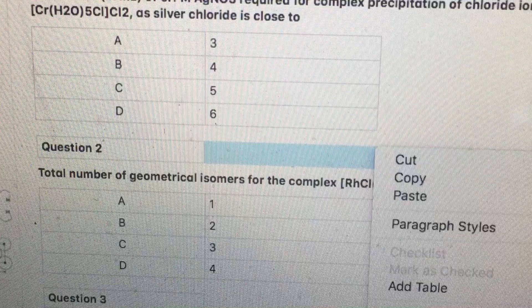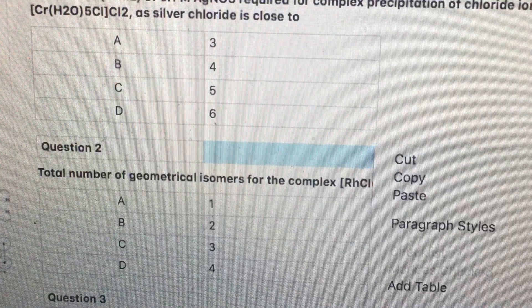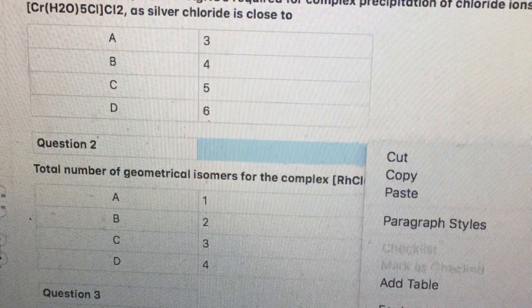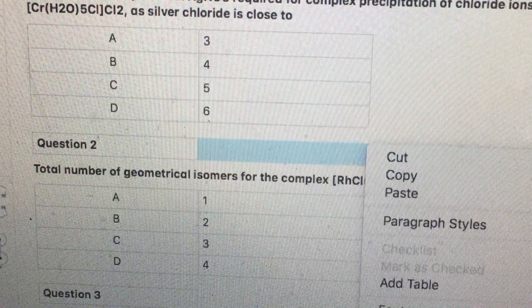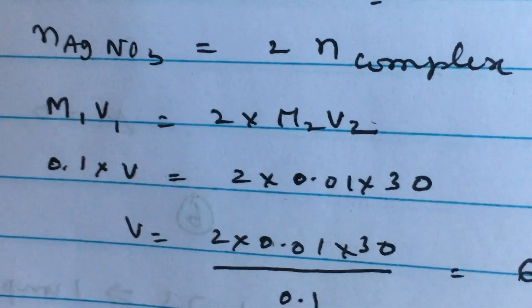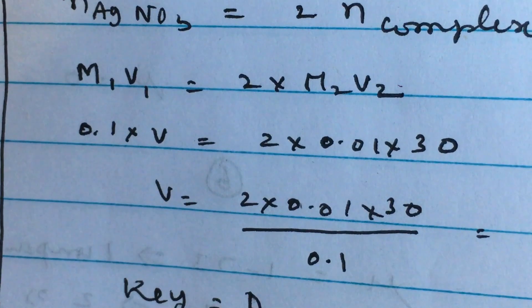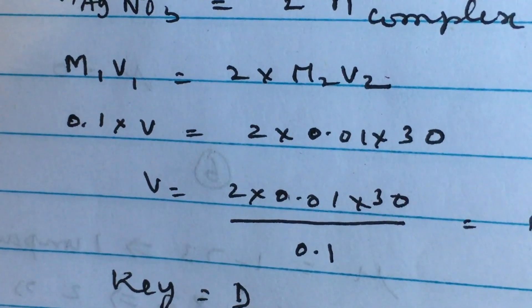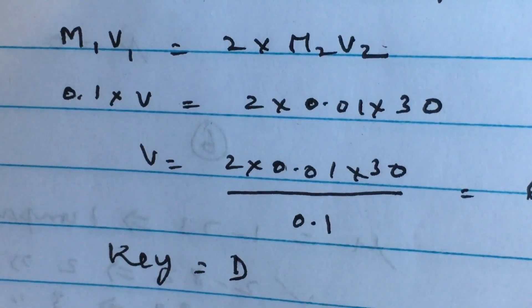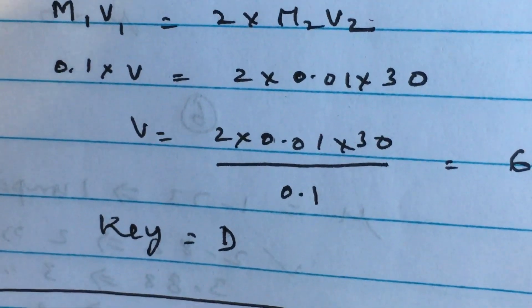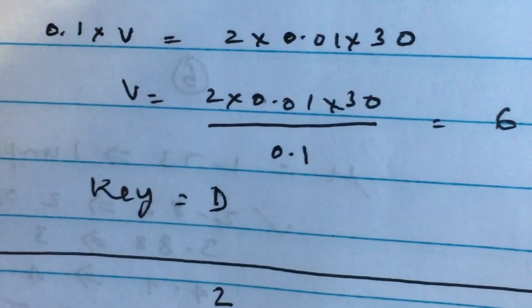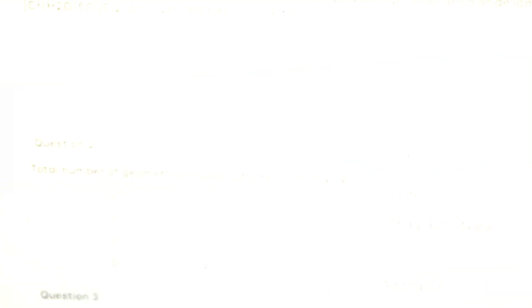Therefore, the number of moles of silver nitrate required to precipitate is equal to 2 times the number of moles of complex ions. The number of millimoles of silver nitrate required is M1V1 equals 2 times M2V2. 0.1 times V2 equals 2 times 0.01 times 30. Obviously, the volume of silver nitrate required would be 6 ml. Answer must be D.